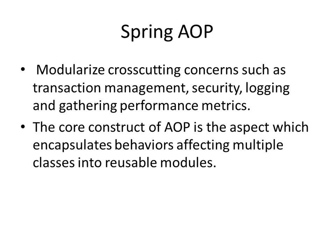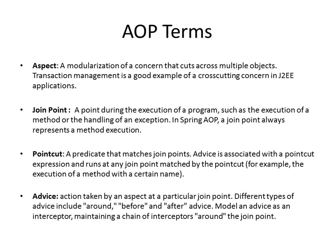AOP is used whenever you have cross-cutting concerns like logging or security. A cross-cutting concern is something which spans across the entire application — your application will need logging, security, transaction management, and performance metrics gathering. That is where AOP comes in. AOP stands for Aspect-Oriented Programming. The aspect encapsulates the behaviors affecting multiple classes into reusable modules. An aspect is a modularization of a concern that cuts across the entire application, such as transaction management, security, or logging.